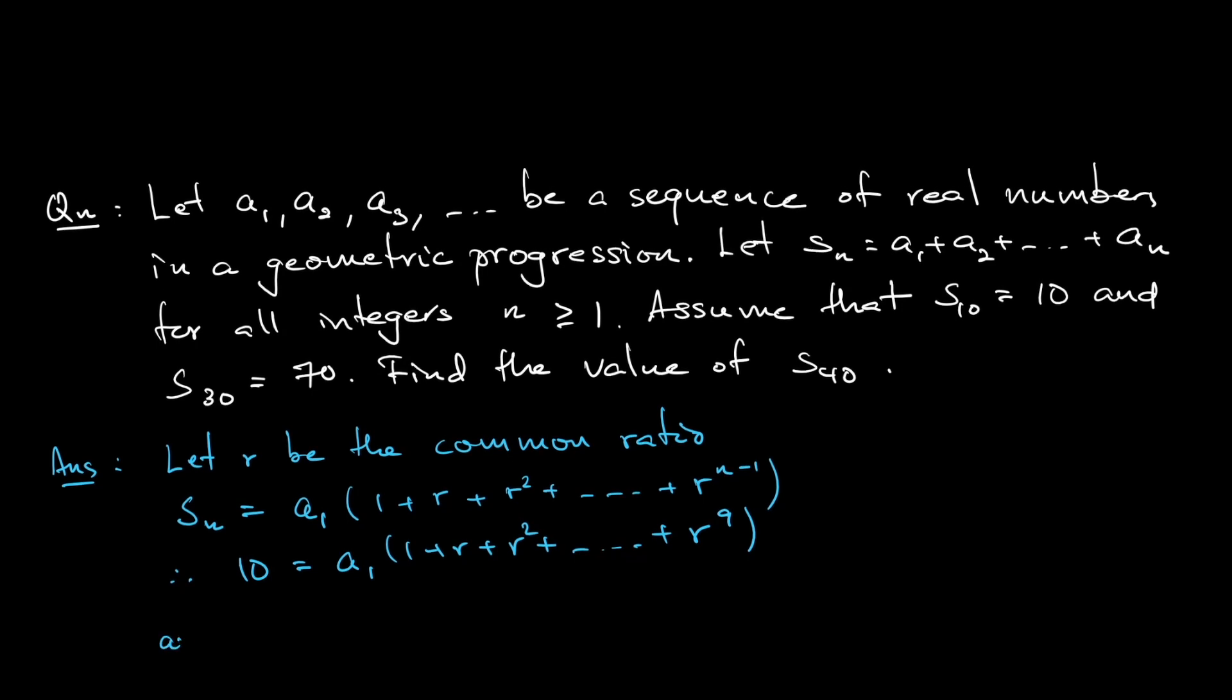And we know the other value, S30 equals 70. So this is a1 multiplied by 1 plus r plus r squared all the way until r to the 29th, remember minus 1, so that is 29.